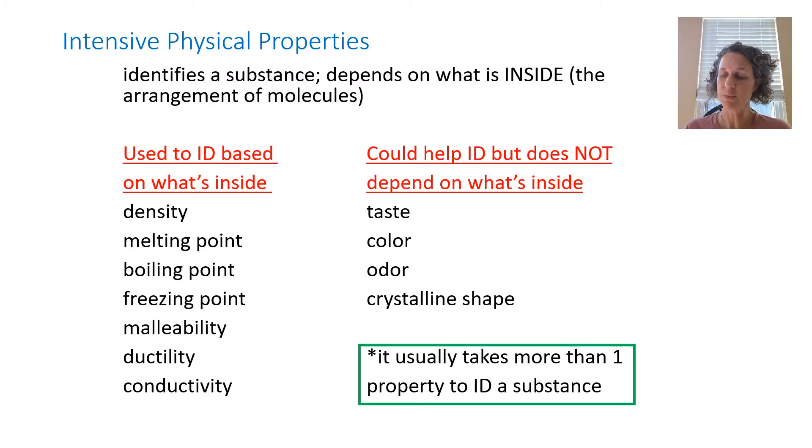Physical properties are divided into two groups: intensive and extensive. Intensive are a little bit more useful in identifying a substance because they depend on the arrangement of molecules internally. Some properties that could be used to identify based on what's inside: the density, so how closely packed the particles are on the inside. The melting point, which is the bonds, how much does it take to break those bonds. The boiling point, how much does it take to totally release the bonds. Freezing point, of course the same thing. Malleability, remember that's if you can shape it. Ductility, pull it into a wire. Conductivity. All of those are very dependent on the internal structure.